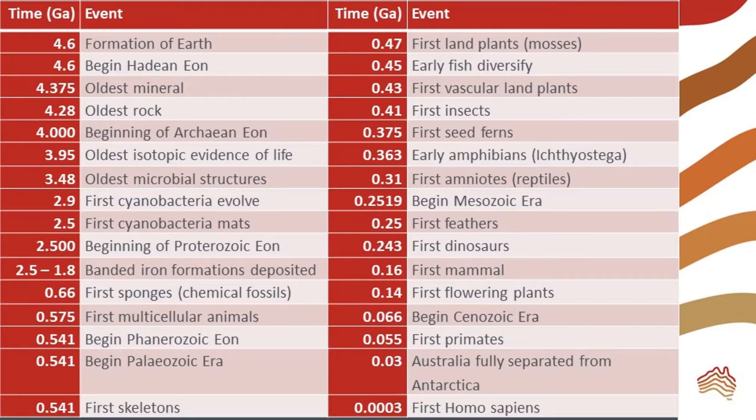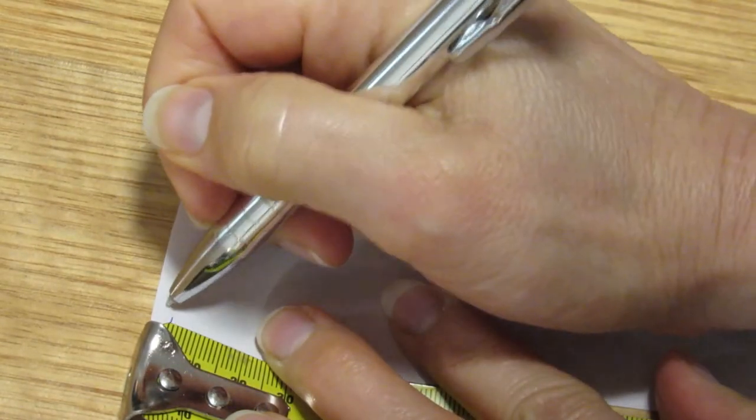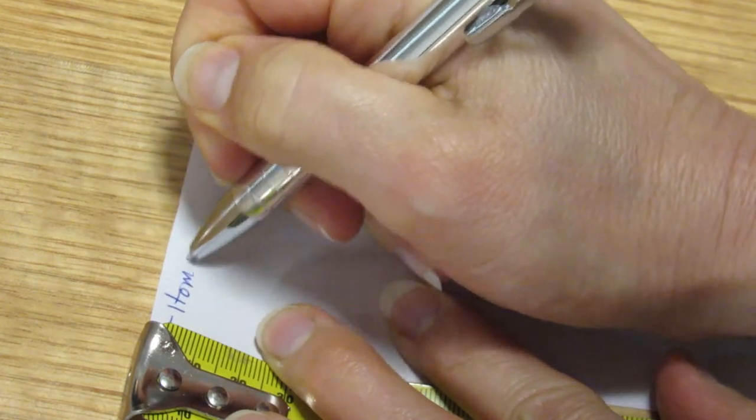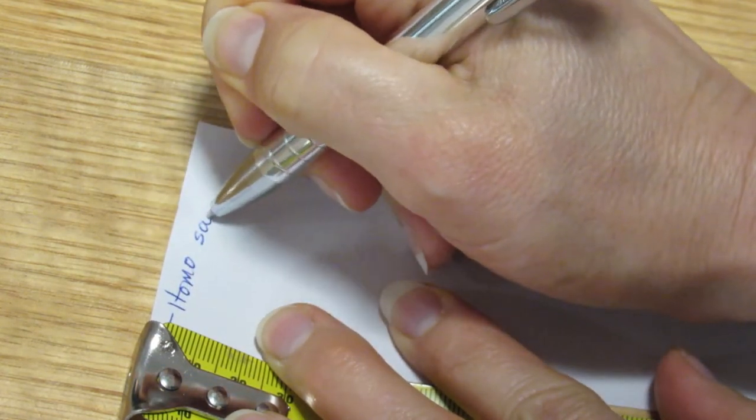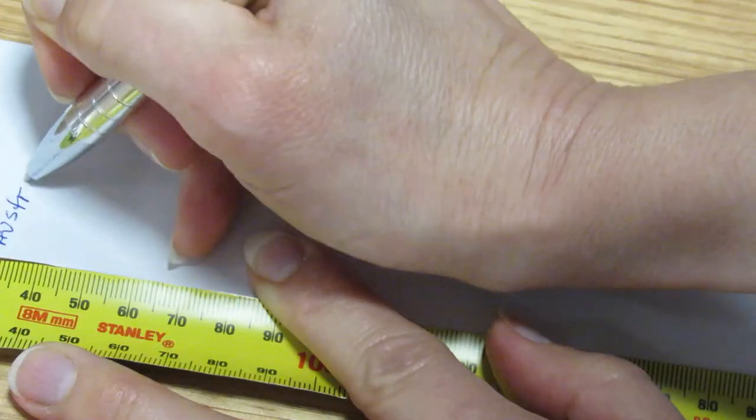You can find this table of events on the OzEarthEd website in the activity Mapping Events in Geologic Time. I am starting with recent events and have marked Homo sapiens in the last 3 millimeters of my timeline. That is actually 10 times longer than it should be. I couldn't draw 0.3 millimeters.